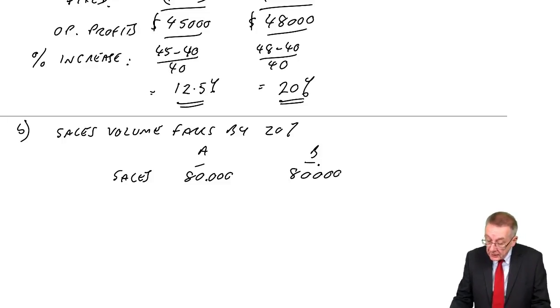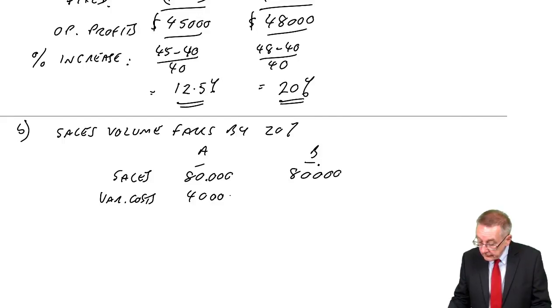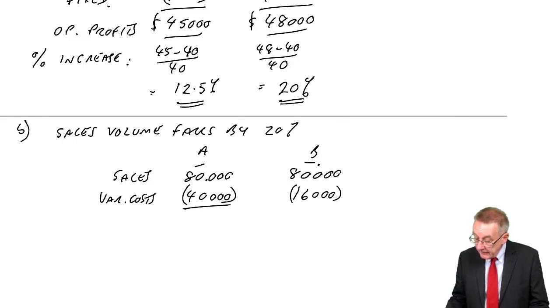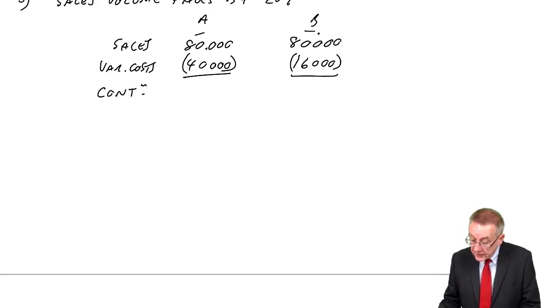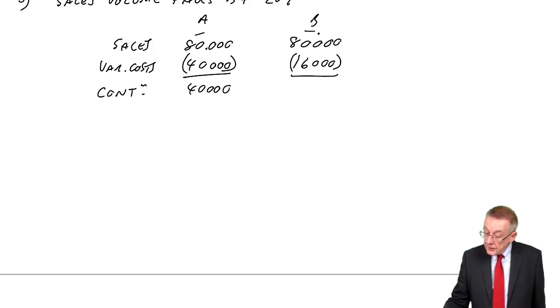Sales volume down by 20%. The sales are currently 100. If they fall by 20%, the sales fall in both cases to 80,000. But if sales volume falls, production falls, the variable costs fall. They'll fall by 20% as well. A, they're currently 50. 20% is 10. They'll fall to 40. Whereas B, the variable costs are currently 20. 20% is 4, so they'll fall to 16. So the contribution, sales less variable costs, profit before fixed costs. A's contribution falls to 40. B's contribution falls to 64.